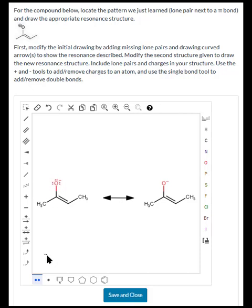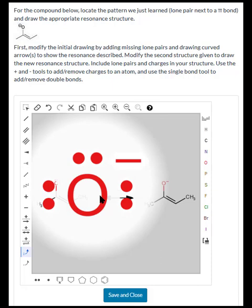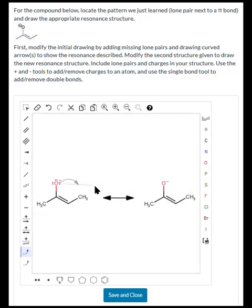And the resonance of a lone pair next to a pi bond uses two curved arrows. I'm going to click on the regular curved arrow that moves two electrons at a time. I'm going to click on the oxygen atom so I can more clearly see any one of those lone pairs, and I can pick any one of those lone pairs. And now it's going to use that as the anchor of my arrow. So my lone pair is going to become a pi bond.